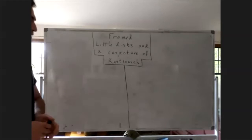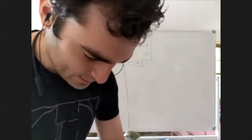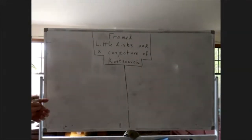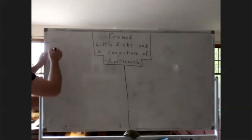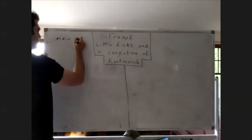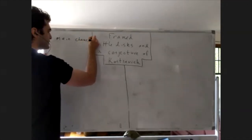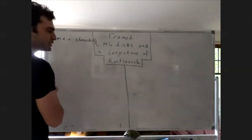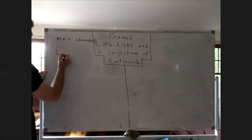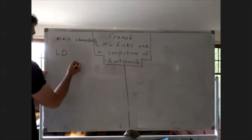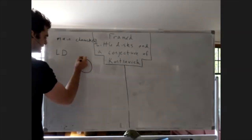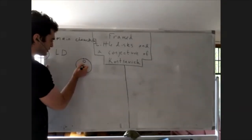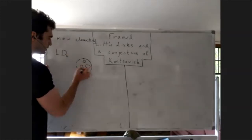Today I'm going to talk about a conjecture of Kontsevich having to do with operads. There will be two main characters, both of them operads. The first operad is the operad of little disks — it's a topological operad whose operation spaces are configurations of n non-overlapping disks in a larger unit disk.